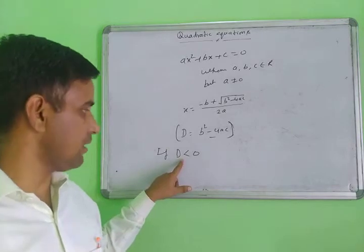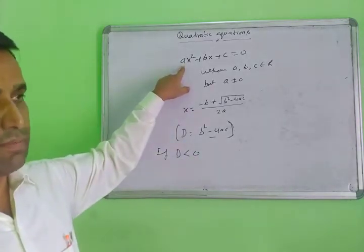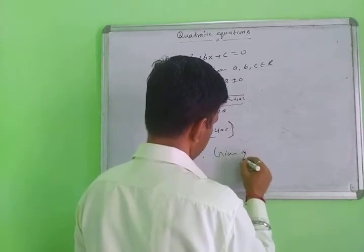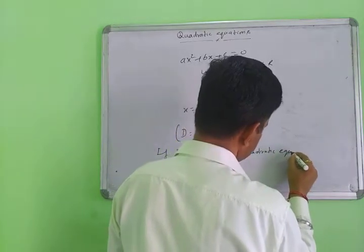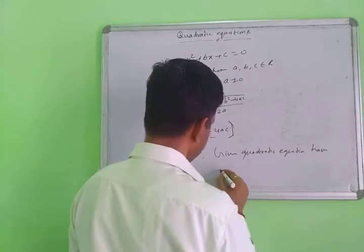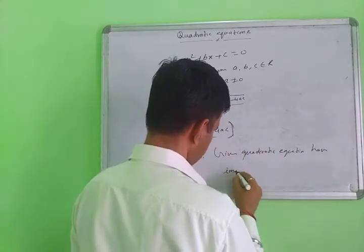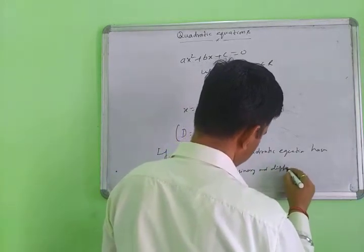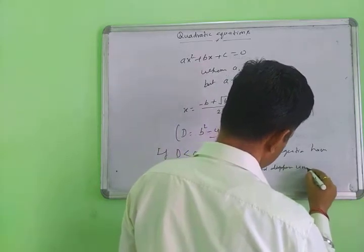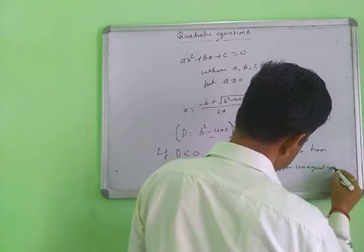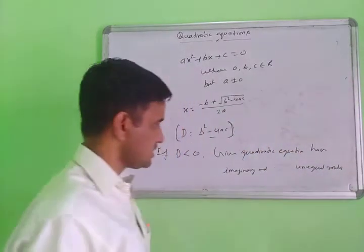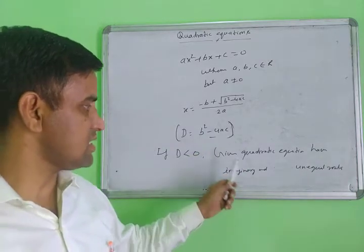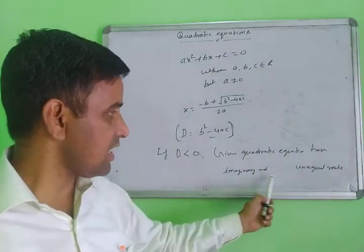If the value of D is negative, then the given quadratic equation has imaginary and unequal roots. Suppose D is less than zero — negative — then you can say the given quadratic equations have imaginary and unequal roots.